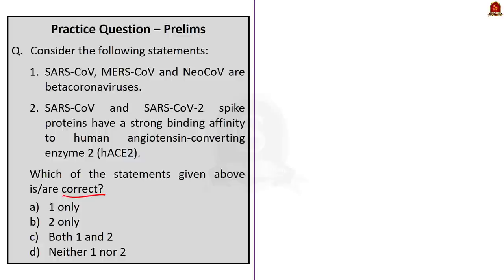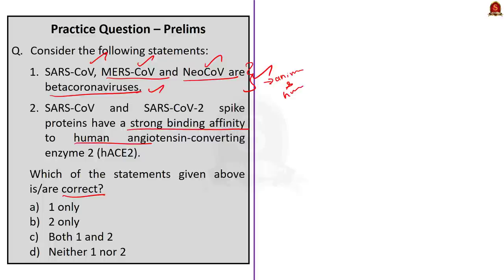The second question is a two-statement question — we have to find the correct statement. Statement 1: SARS-CoV, MERS-CoV, and NeoCov are beta coronaviruses — this is correct, as all three are indeed beta coronaviruses that infect animals and humans. Statement 2: SARS-CoV and SARS-CoV-2 spike proteins have a strong binding affinity to human Angiotensin Converting Enzyme 2 (hACE2) — this is also correct. Along with SARS-CoV-2, SARS-CoV-1 also has a strong binding affinity to human ACE2. Since both statements are correct, the correct answer is option C: both 1 and 2.